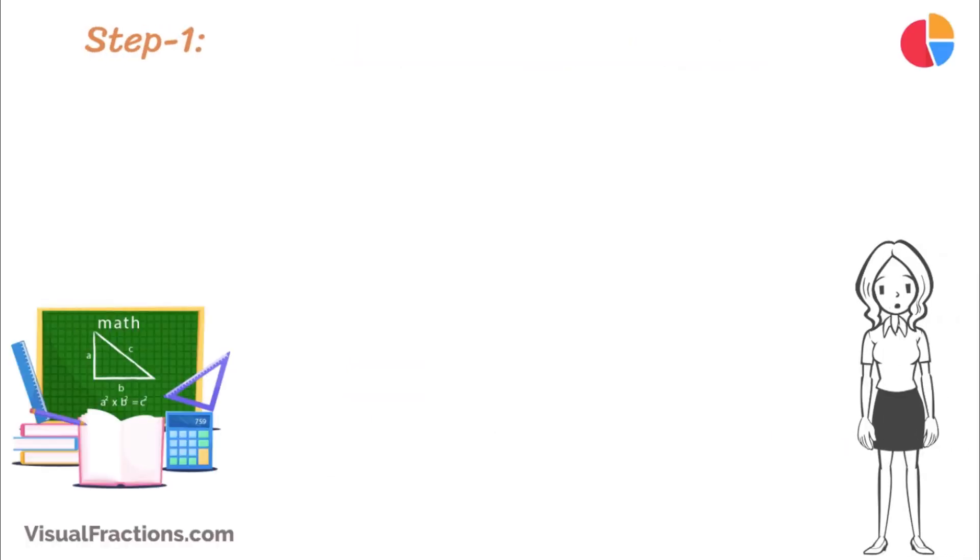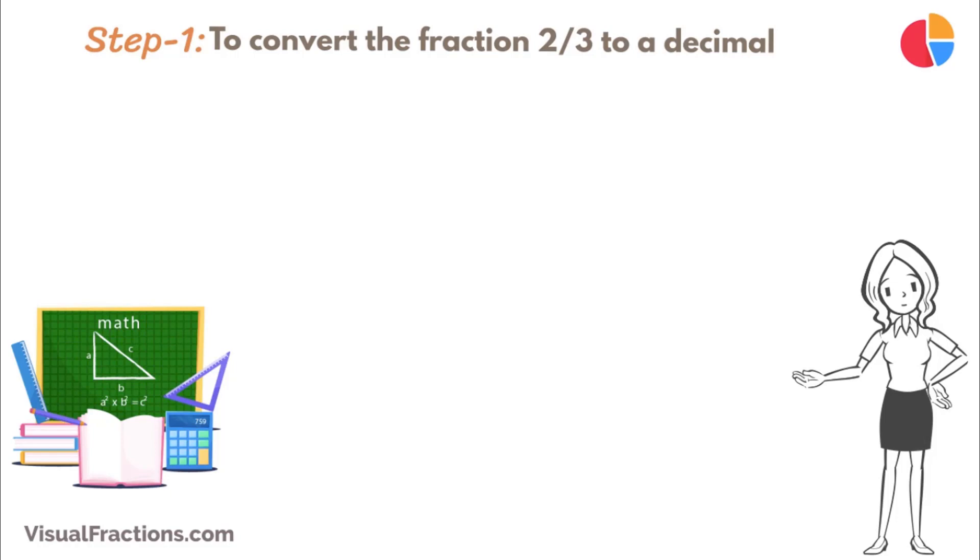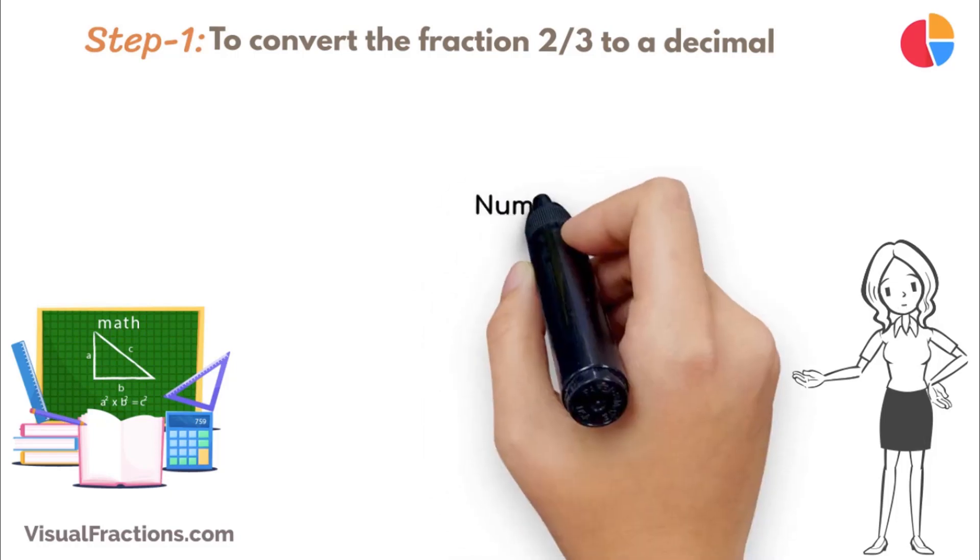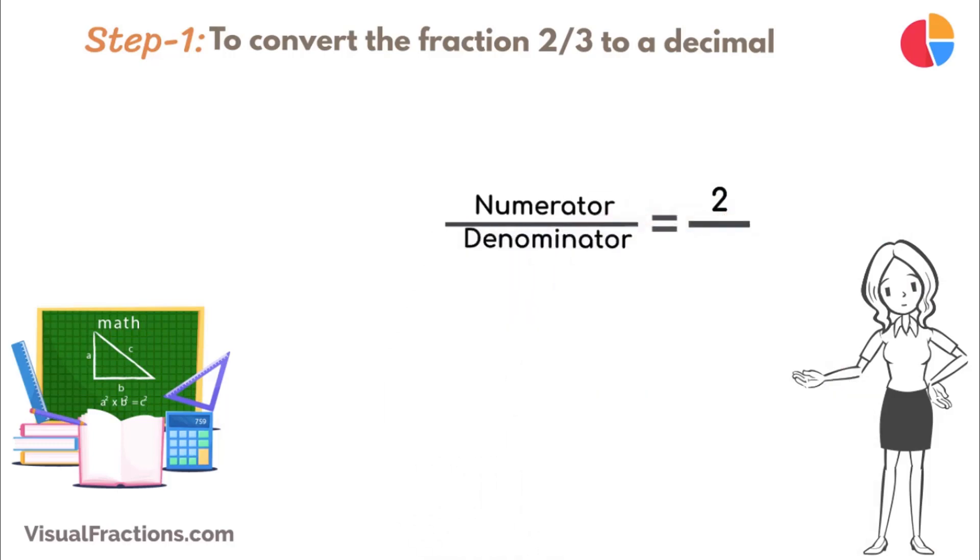The first step in converting the fraction two-thirds to a percent is to convert this fraction to a decimal. We do this by dividing the numerator, the top number, which is 2, by the denominator, the bottom number, which is 3.